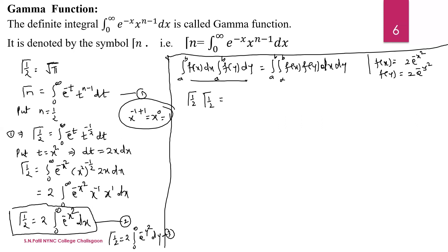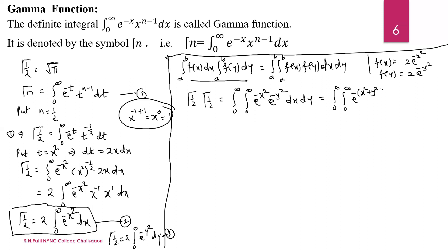Multiplying equations 2 and 3, gamma of 1/2 times gamma of 1/2 gives gamma of 1/2 squared. The right-hand side becomes the double integral from 0 to infinity, 0 to infinity, of e to the power minus x squared times e to the power minus y squared dx dy, which simplifies to e to the power minus (x squared plus y squared) dx dy.